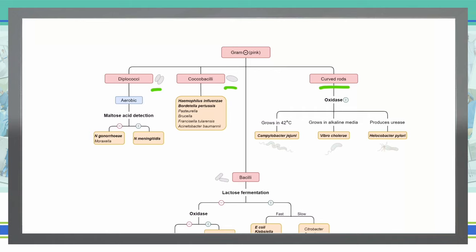And basically what that is doing is we are adding a carbohydrate of maltose to the solution containing the microorganism as well as a pH indicator. If that solution turns yellow after adding that carbohydrate of maltose, then we have a maltose acid detection positive. That will indicate that we are dealing with Neisseria meningitidis. If we do not see that change in color from red to yellow after adding our maltose to that solution, then we are dealing with Neisseria gonorrhoeae or Moraxella.